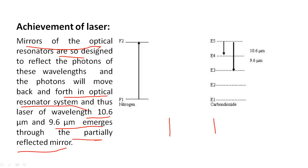Thus lasers of wavelength 10.6 micrometers and 9.6 micrometers emerge through the partially reflected mirror. To understand this, you must see my earlier video lecture about the optical resonator system. This is the system to produce photons of equal wavelength—that is, to produce a laser beam.